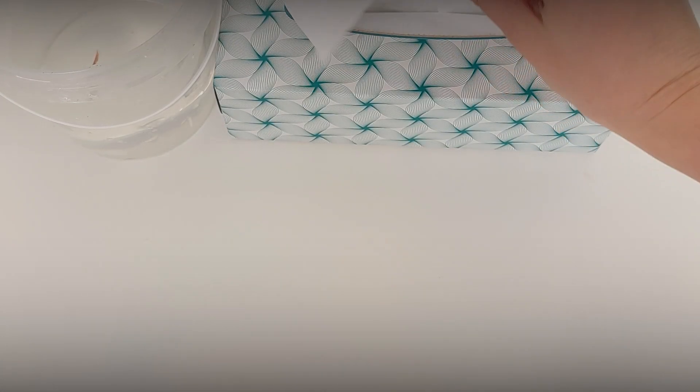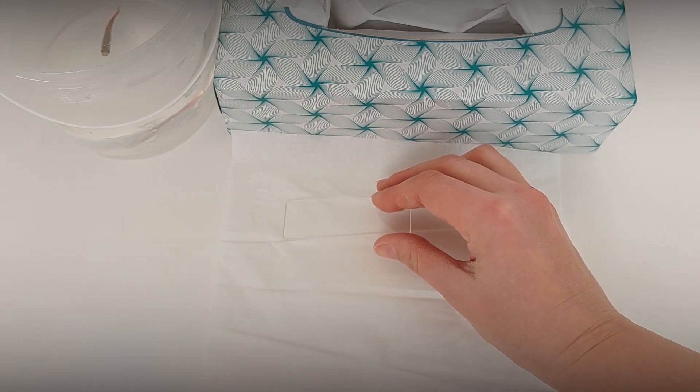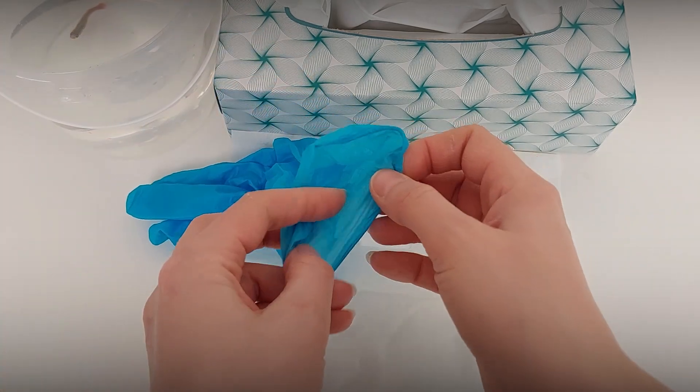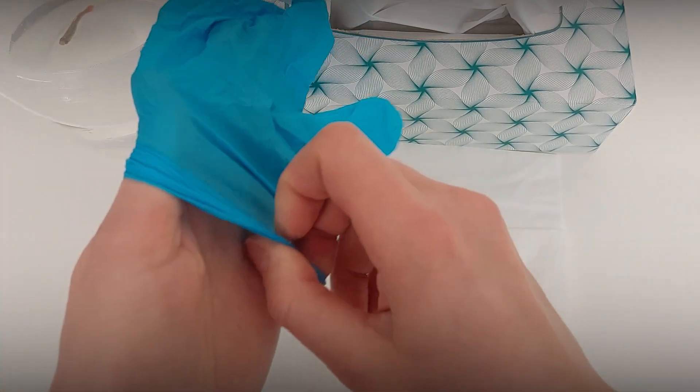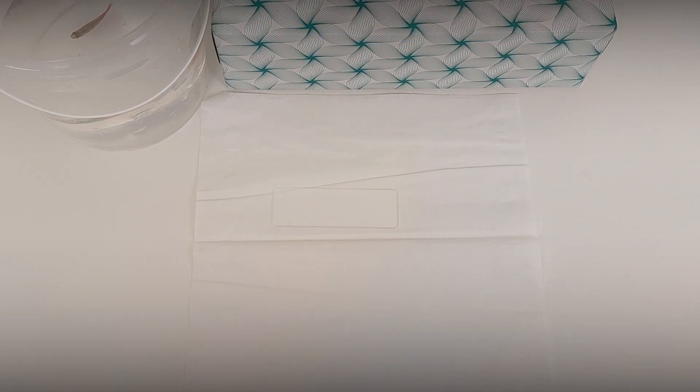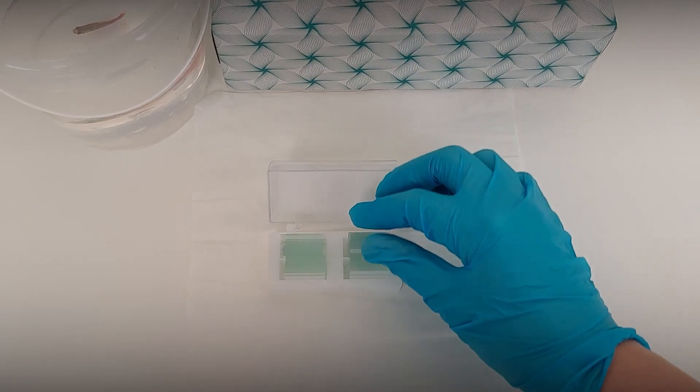Place the slide on a tissue or towel to prevent water from getting between the glass and table. There are several different ways and various tools we can use to do the skin scraping. For this small sized fish, I prefer to use a cover glass. But for larger fish, I use a slide.